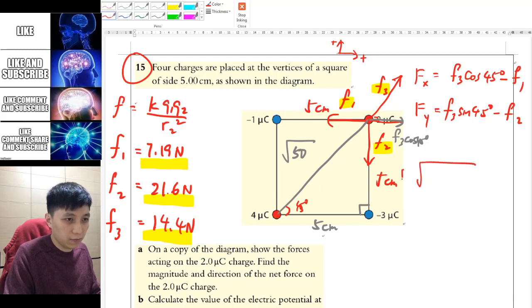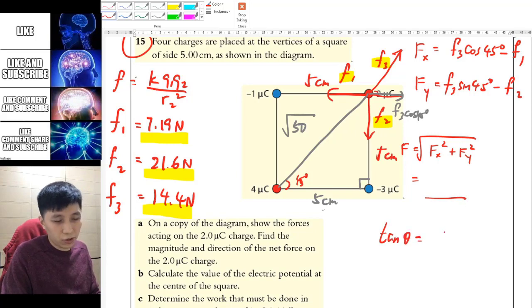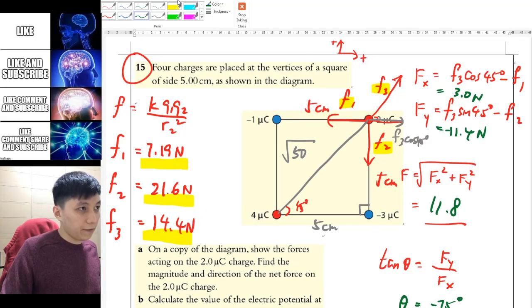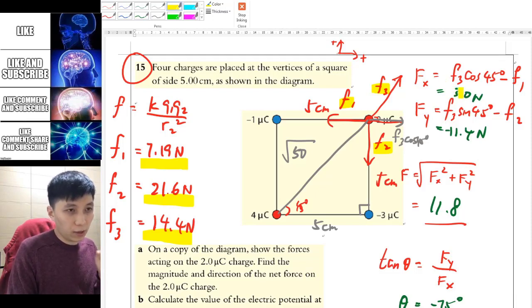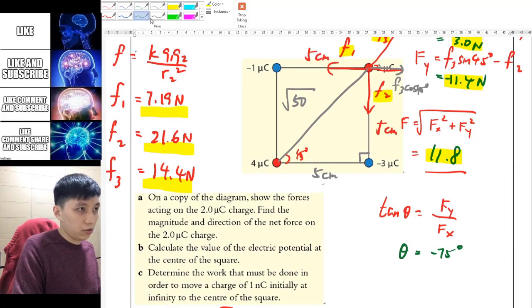Using Pythagoras theorem for magnitude, F equals square root of Fx squared plus Fy squared, which gives 11.8 Newtons. For the angle, tangent theta equals Fy over Fx, giving negative 75 degrees to the horizontal.